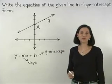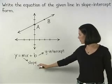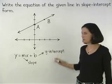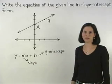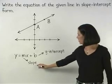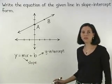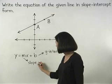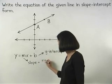So our first step is to find the slope and y-intercept of the given line. To find the slope, remember that we use the ratio rise over run between any two points on the line.